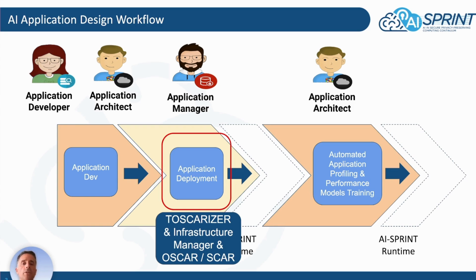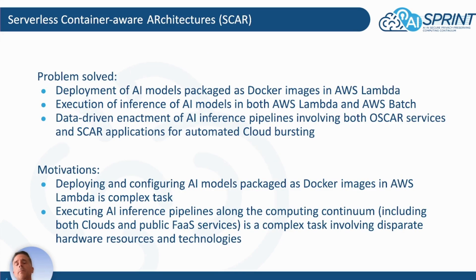SCARP can also be used to delegate the execution of some jobs into AWS Lambda, the public functions-as-a-service offering by AWS. SCARP allows deploying AI models packaged as Docker images in AWS Lambda, and it allows executing inference of AI models in both AWS Lambda and AWS Batch.